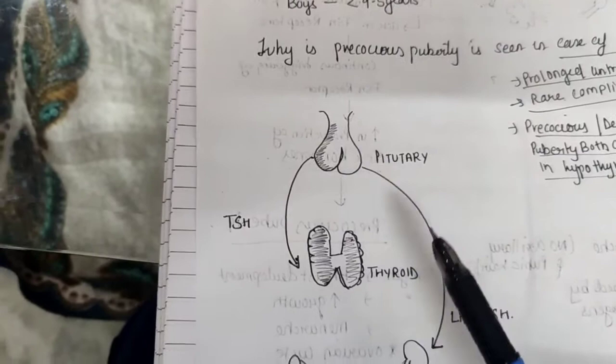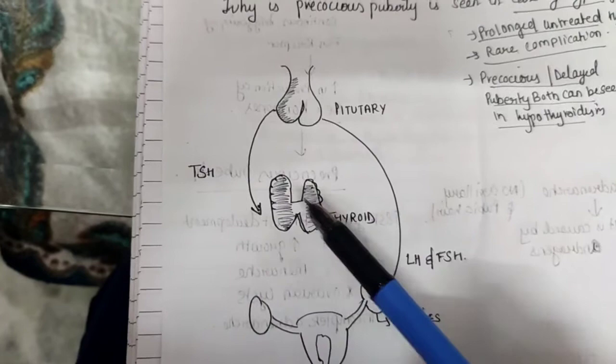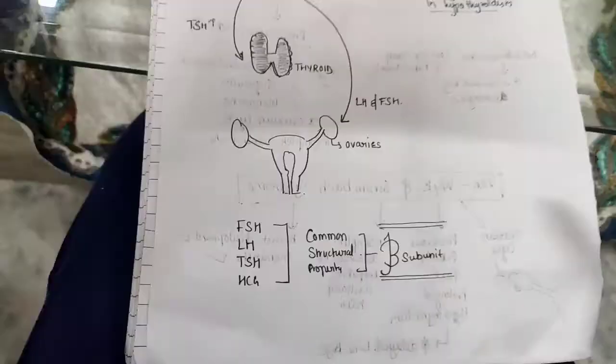What happens? This is a pituitary that I have drawn here. This is the thyroid and this is the ovary attached to the uterus. The TSH that is secreted by the pituitary should be acting on the thyroid, and the LH and FSH act on the ovaries.